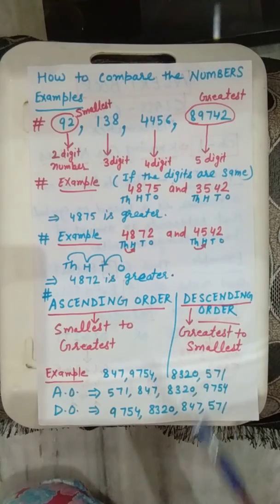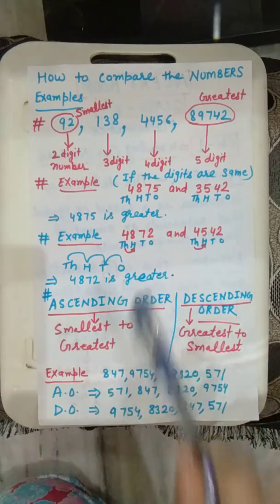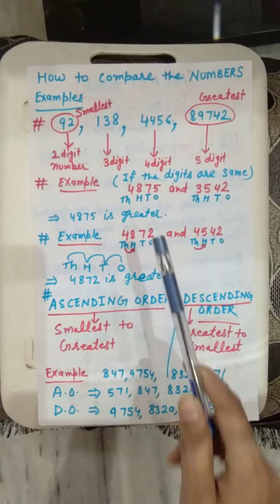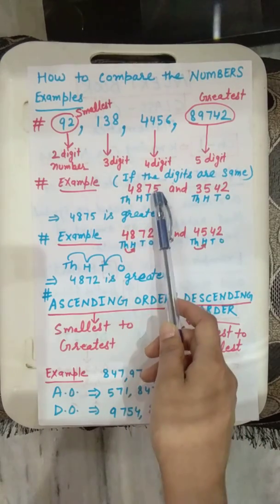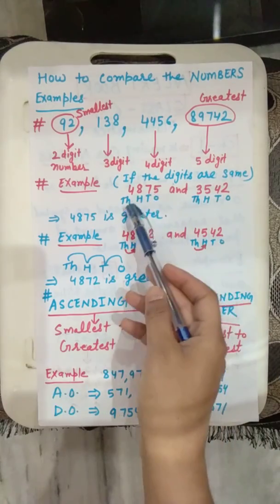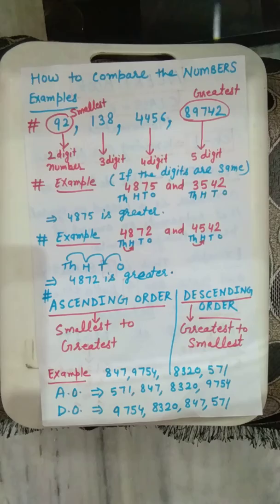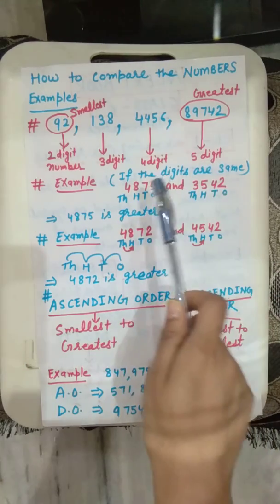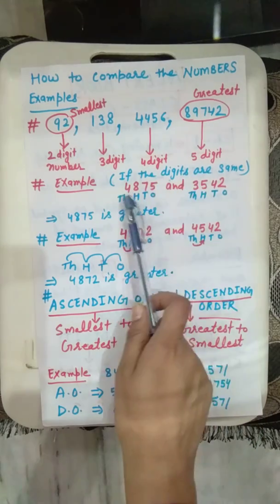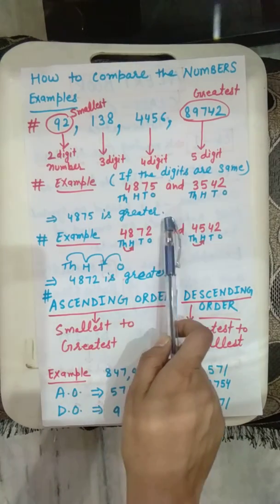If the digits are the same, then how can you compare the numbers? Suppose 4875 and 3542. These two numbers have the same number of digits and they are both in the thousands. So compare by the first digit: 4 versus 3. Since 4,000 is greater than 3,000 — 4 is greater than 3 — you can say that 4875 is the greater number.